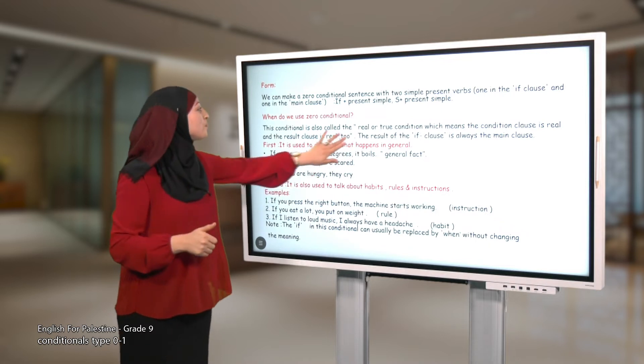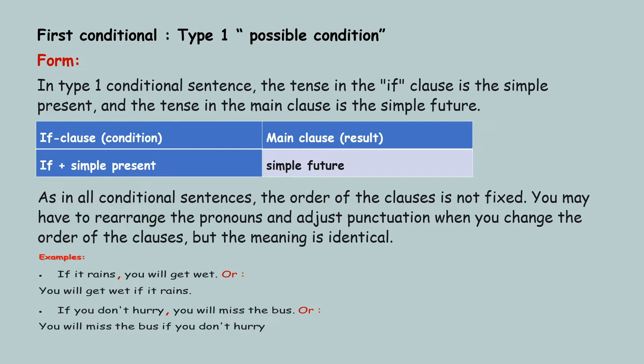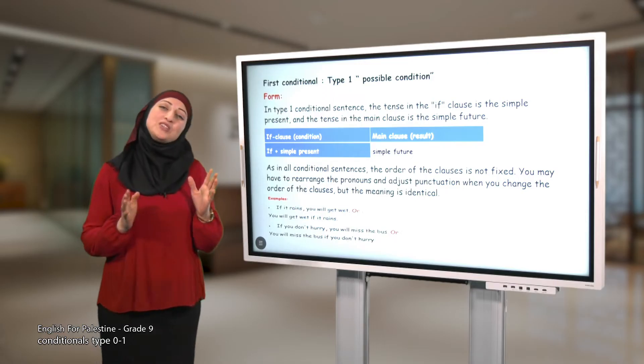Now let's move to conditional type one. According to this conditional, I'm talking about possible condition. If this happens, something else will happen. So I have a rule for you: if clause and the main clause. The if clause - we are talking about the condition itself - and the main clause is the result for this condition. In the if clause I will use if plus simple present verb. In the main clause I will use simple future verb with the subject.